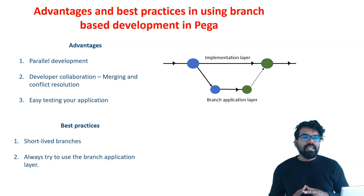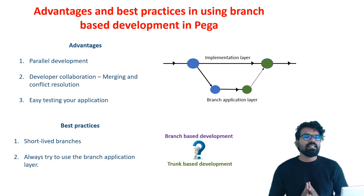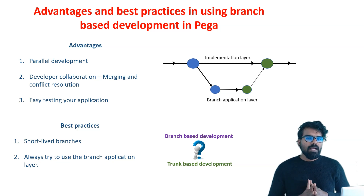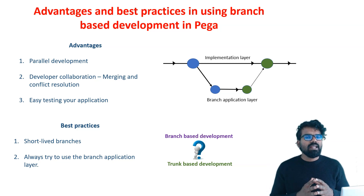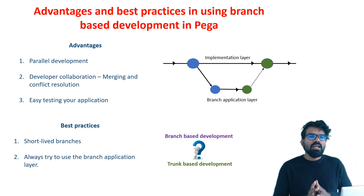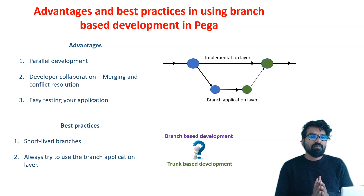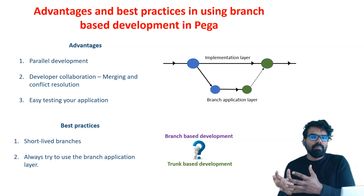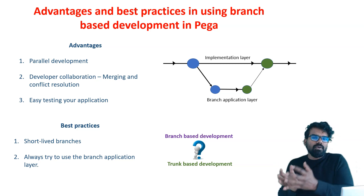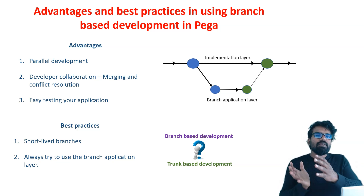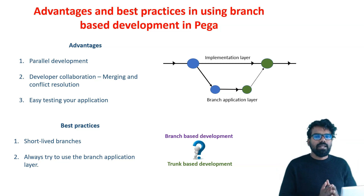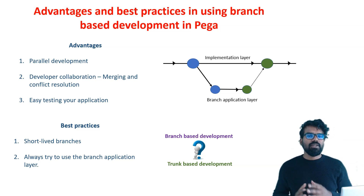Now the final question before I end this video: what type of development strategy are we using in Pega? Are we using branch based development or trunk based development? I would say 50-50 — we have a kind of hybrid between the two. Now that we know how to start with branch based development, the first step will be to create a branch application layer, then start adding branches, save your source code into a branch, do the change, do a code review, and use the merge wizard to push your changes into the implementation layer. This is what we are going to see in the next video. See you there.